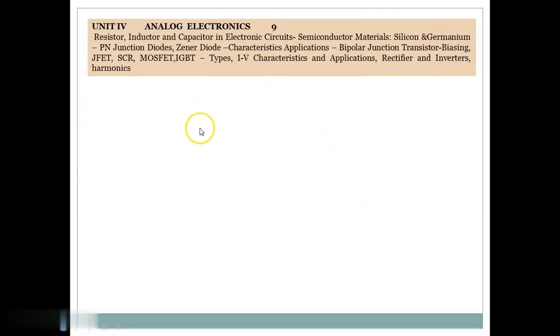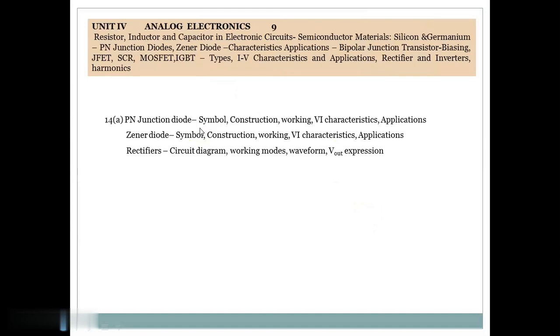The fourth unit is Analog Electronics. In Analog Electronics, it covers Diode Family like PN Junction Diode and Zener Diode. Then Transistors, Family of Transistors. They are BJT, JFET, MOSFET, IGBT. Then the Family of Thyristor, especially for SCR. All these devices are covered in Unit Number 4 along with its Applications. They are Rectifiers and Inverters.